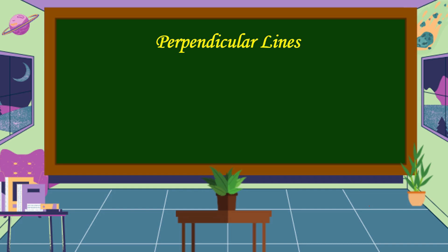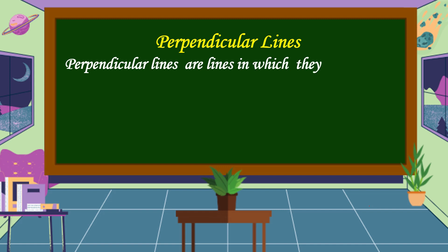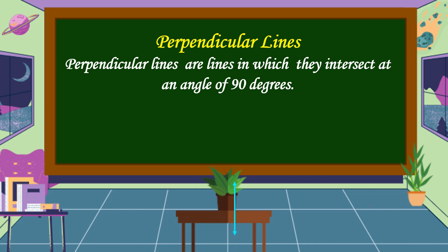What are Perpendicular Lines? Perpendicular Lines are lines that intersect at an angle of 90 degrees. This is an example of Perpendicular Lines.